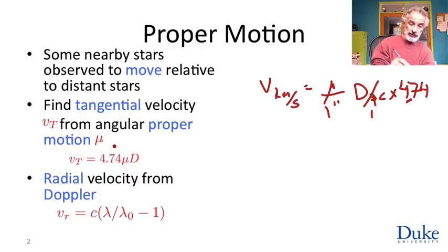This is how we measure a star's transverse velocity. A star can also have a radial velocity, and we can measure its radial velocity by measuring the Doppler shift. If you find some spectral line, we find its shift.